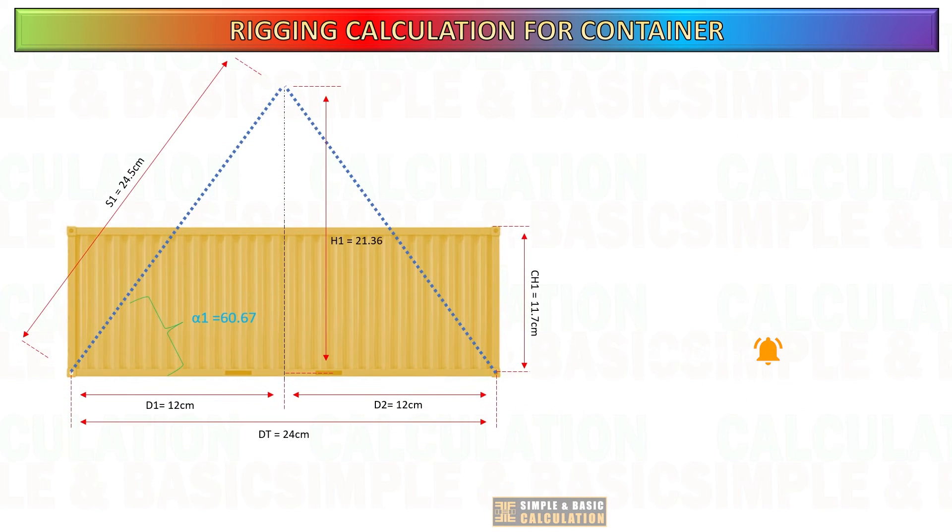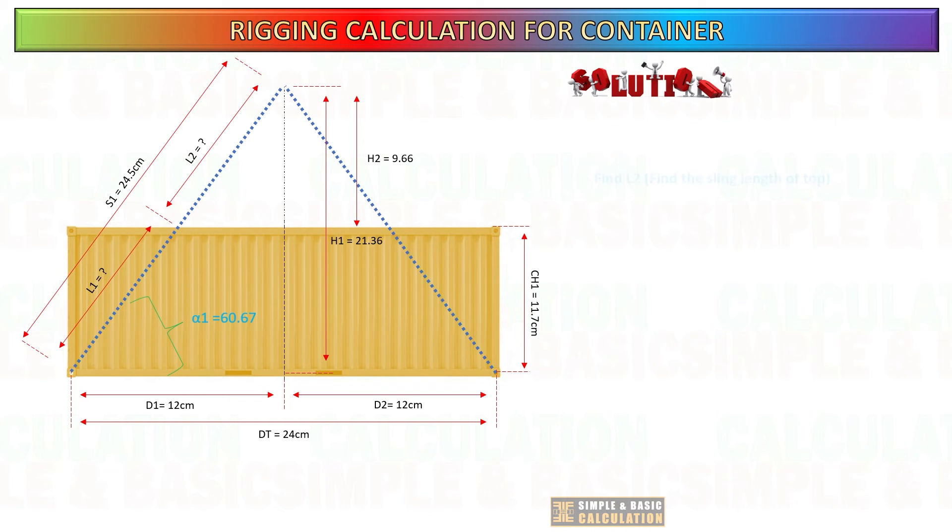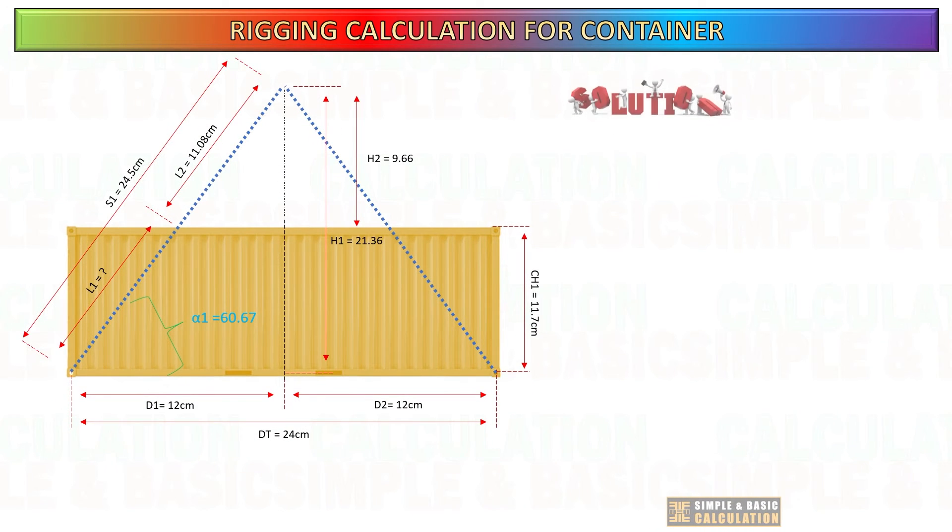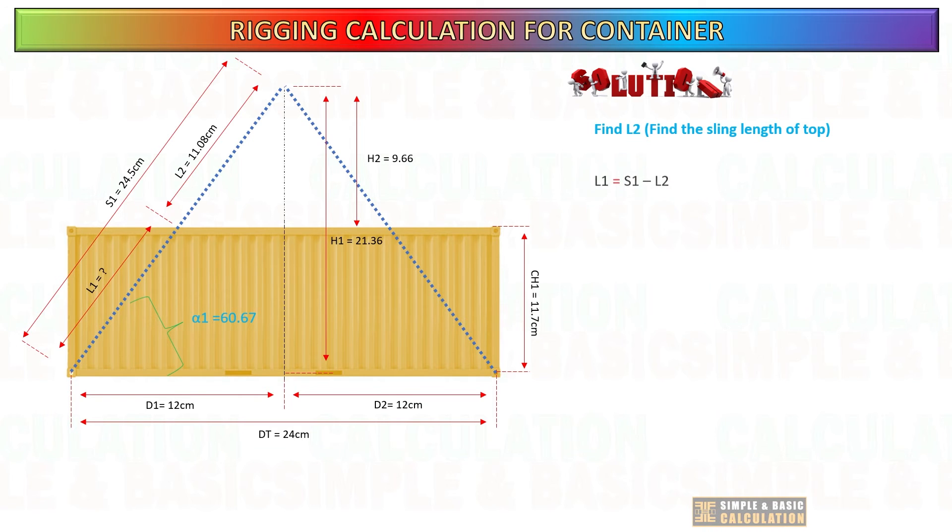Now that we have obtained that value, we can proceed to compute the length of the sling before it is bent, and the length of the sling that bends on top of the container. To get the L2, which represents the length of the rigging on top, divide h2 by the sine of the angle of the sling. And to get the L1, which is the length of sling before it is bent, just minus L2 from total length of rigging or sling.